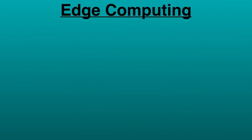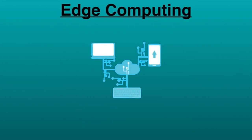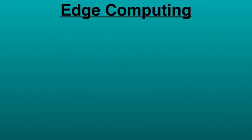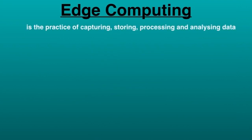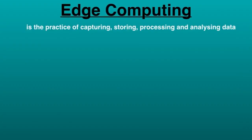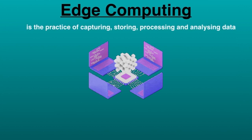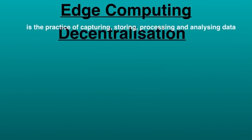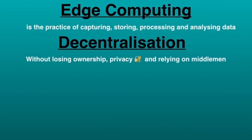Web 3.0 will be built on the following technologies. Edge computing is the practice of capturing, storing, processing, and analyzing data near the user where the data is produced, instead of in a centralized data processing center. In Web 3.0, data would be decentralized — decentralized data networks will enable various content creators to sell their data without losing ownership, privacy, or relying on middlemen.